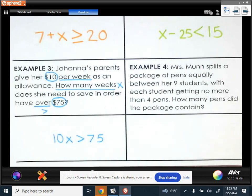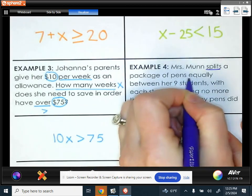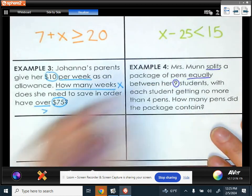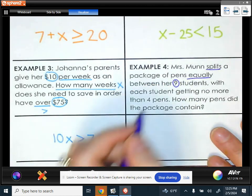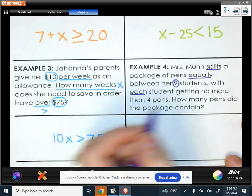Our last example says Mrs. Munn splits a package of pens equally between her nine students. So when I see split equally, that makes me think of division, and it's being split equally among nine students. We also see the word each here. So each means multiplying or dividing. That could help us.